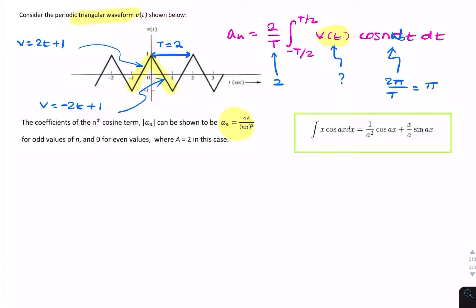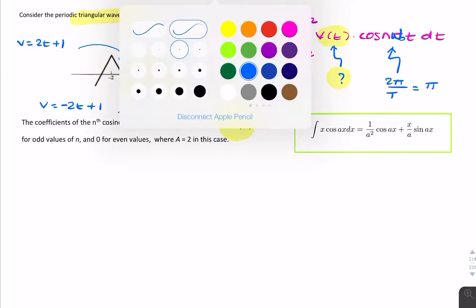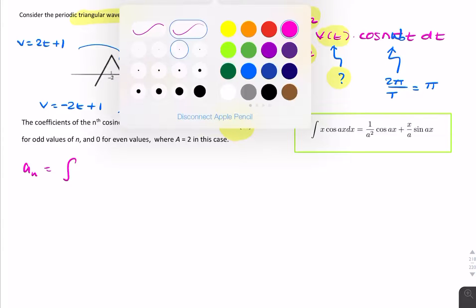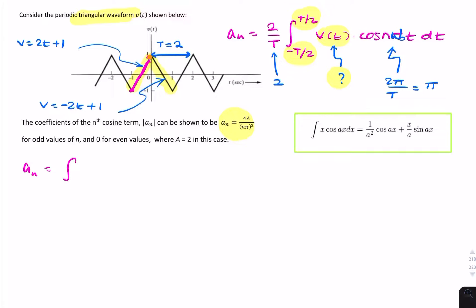And we simply replace that there. So now I can write my expression as such. I can say a n equals 2 over 2 is simply 1, so I'm integrating from minus t over 2, so that's minus 2 over 2, that's minus 1, to 1. So I'm going to integrate twice, from minus 1 to 0 with this part, and then from 0 to 1 for this part.